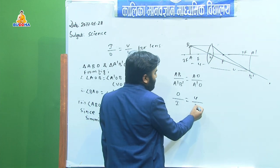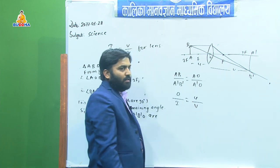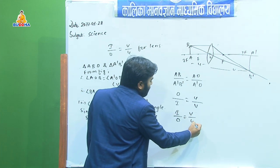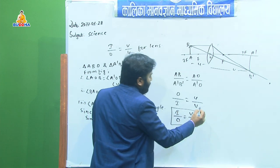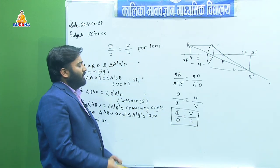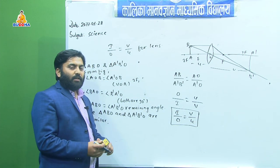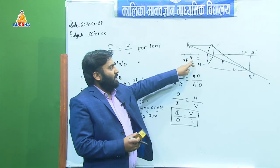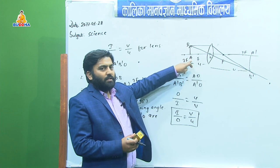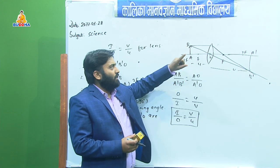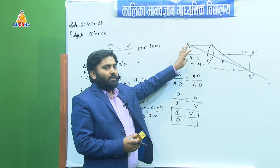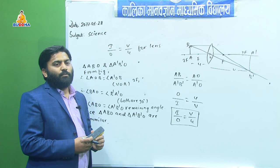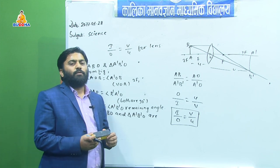AO is represented by U and A'O is represented by V. Then we can write I/O = V/U. This proves the required equation for the lens. The earlier confusion was about the labelling of A and B in the figure, but everything is correct and this proves I/O = V/U.